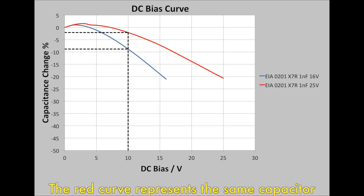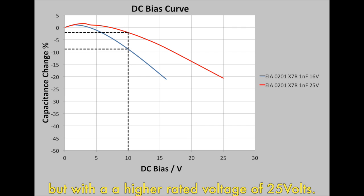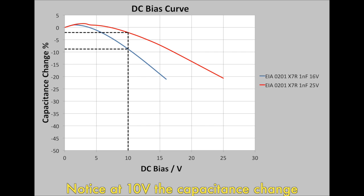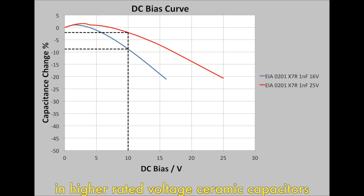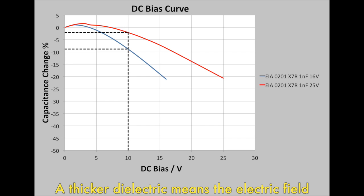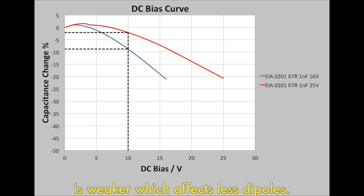The red curve represents the same capacitor but with a higher rated voltage of 25 volts. Notice at 10 volts the capacitance change has a decrease of only 2 percent. This is because the dielectric layers will be thicker in higher rated voltage ceramic capacitors. A thicker dielectric means the electric field is weaker, which affects fewer dipoles.